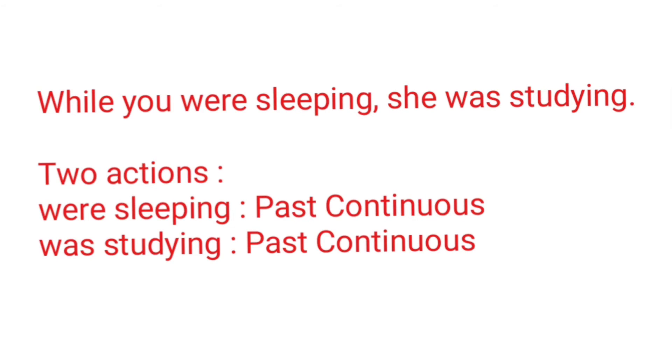Use number two: this tense is used to denote actions going on at the same time in the past. Example: while you were sleeping, she was studying. There are two actions in the sentence — 'were sleeping' and 'was studying' — and both actions are going on at the same time in the past.